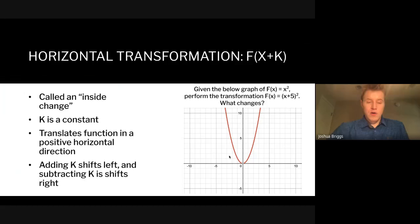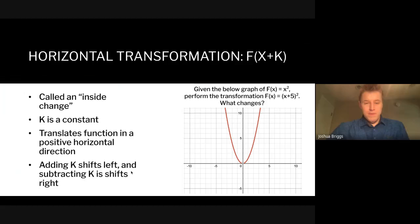The same way that we can move things up and down, we can also move them left and right. This is called an inside change, which is when you add or subtract a value on the inside of the operation. This is why we use the x² function — with a linear function an inside change and outside change are actually the same thing, making it hard to visualize. When you add values inside the operation, it shifts your function to the left, and when you subtract values of k, it shifts your function to the right.